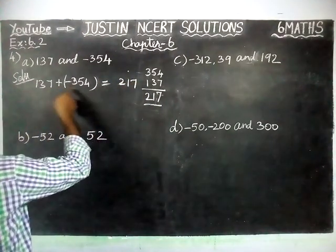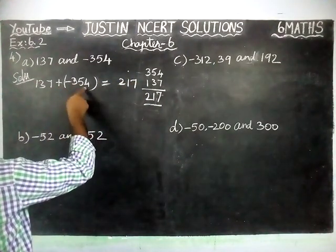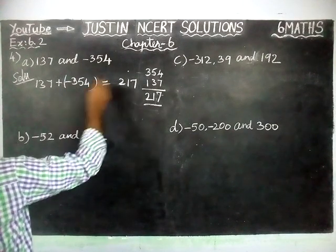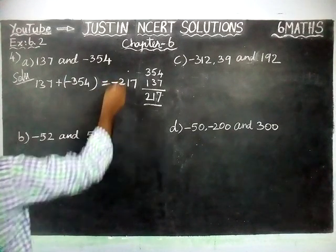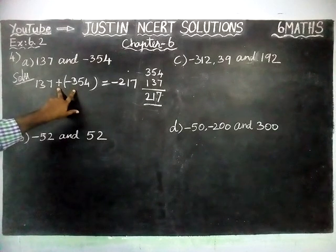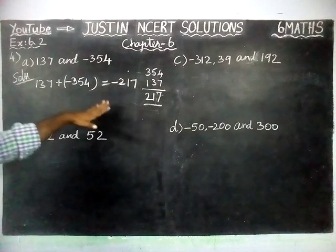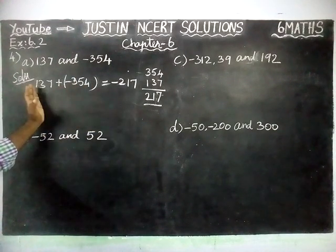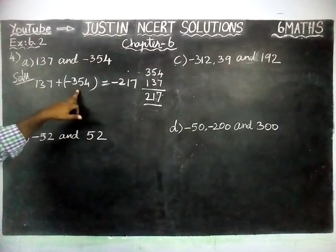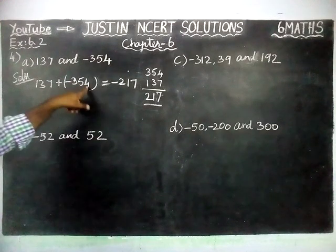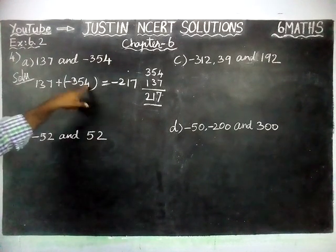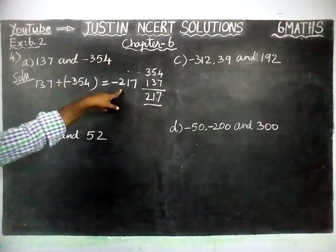In this, the greatest number is 354. In front of the greatest number, minus sign is there. When we are finding the difference, after that forget about the sign. Now we have to compare only the numbers. 354 is the greatest number, and in front of this minus sign is there. So the answer is minus 217.